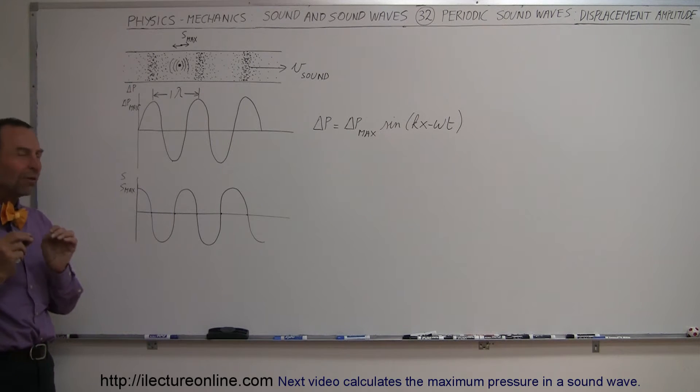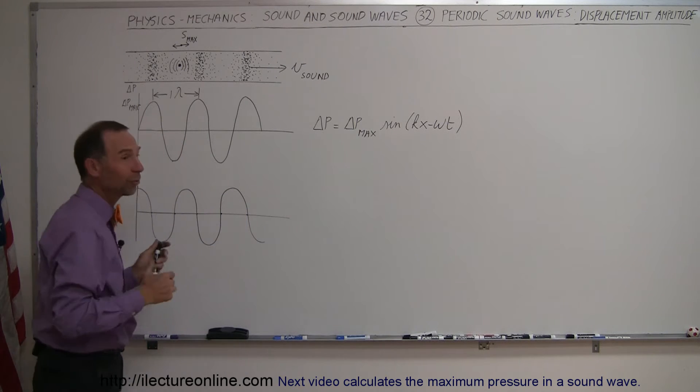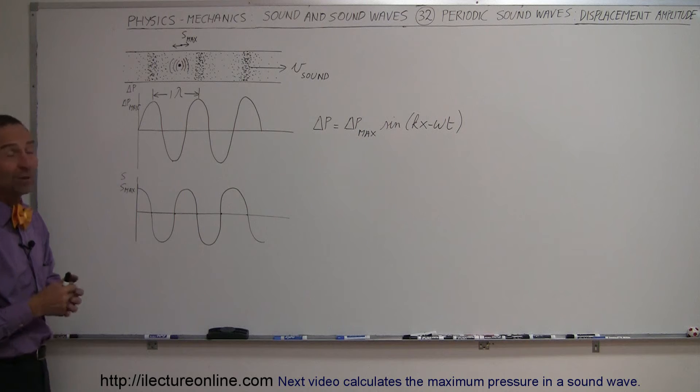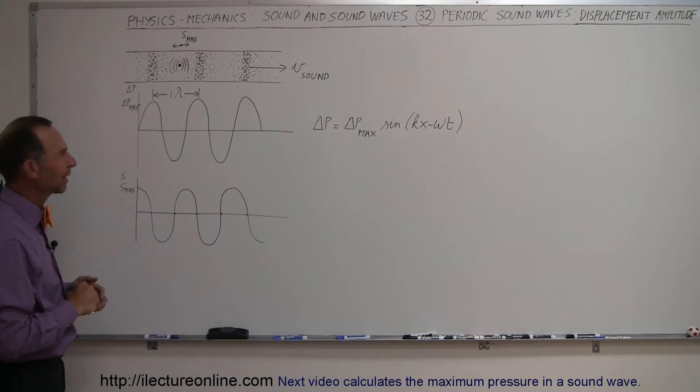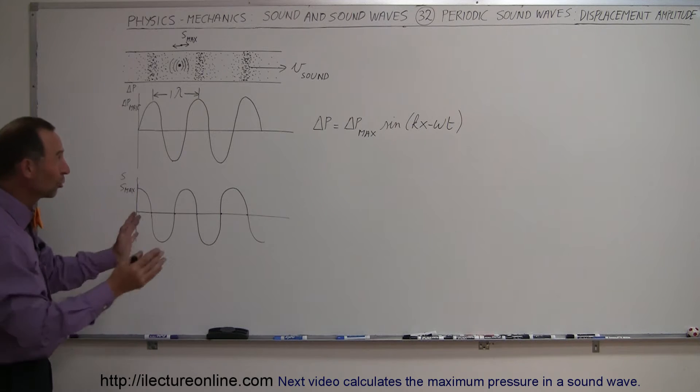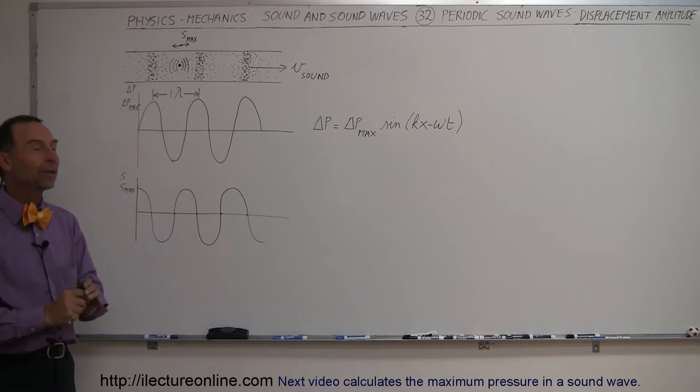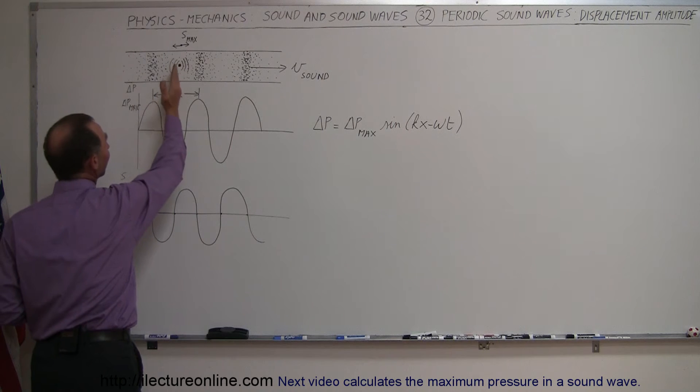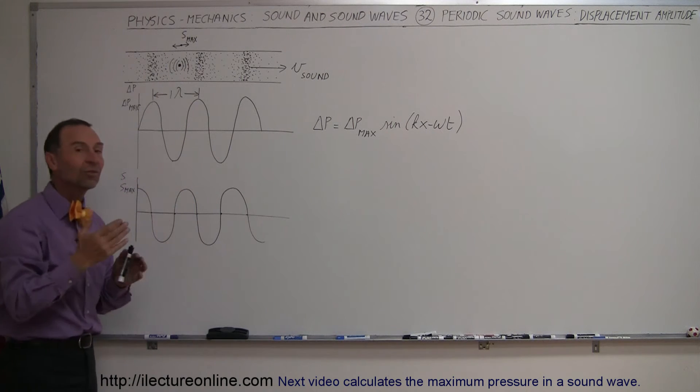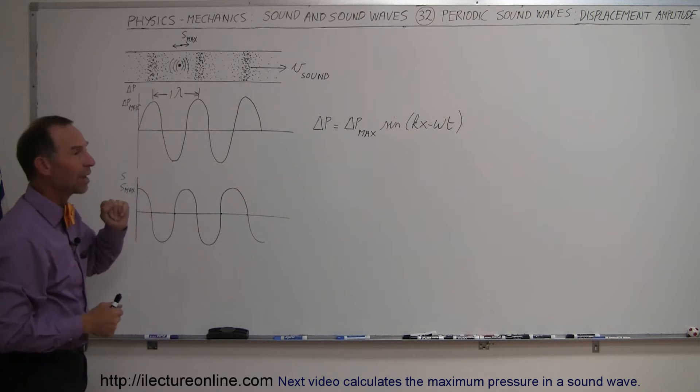But what's not very well understood is that the actual molecules don't actually move through the air at the speed of sound. Because if they did, 340 meters per second, you'd have wind blowing at 340 meters per second, and that would be like a very strong hurricane, a very strong tornado, and destroy everything in its path. So that's not what's happening. What's happening is that the molecules actually vibrate back and forth at the same frequency as the generation of the pressure waves.